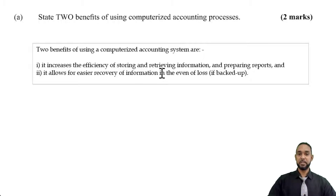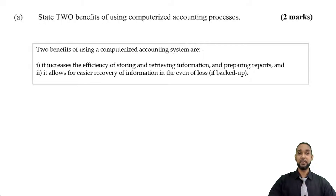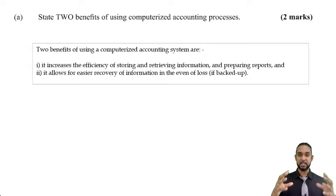Of course, it allows for easy recovery of information. Most of you have probably had the experience, if not of losing a copybook or maybe a textbook, of having files disappear from a computer, or having it saved on a flash drive that failed. That's why you should have multiple backups in different places, both physical and in the cloud. Those are two benefits of using a computerized accounting system — if you can think of any other benefits, please leave them in the comments section below so we can get a nice big list and share information together.